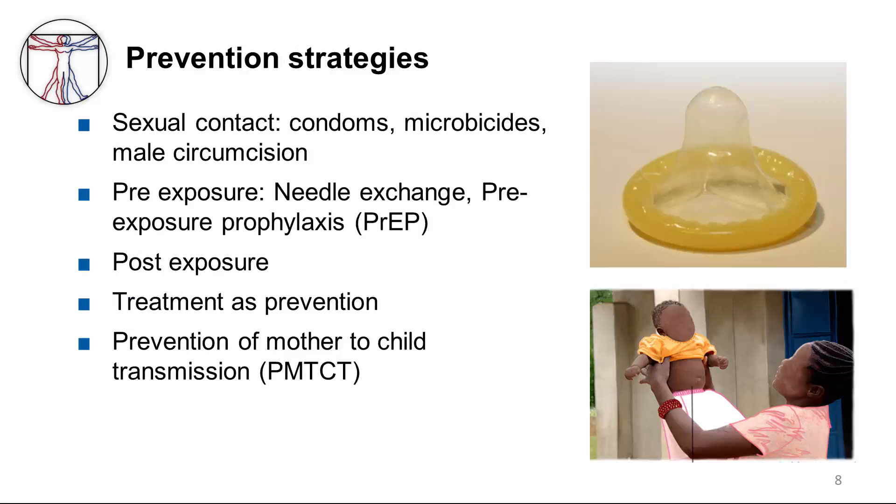This slide presents a summary of some of our prevention strategies. Regarding sexual contact, condoms, microbicides, and male circumcision have been studied and are effective. For pre-exposure strategies, these include needle exchange and pre-exposure prophylaxis. There's also post-exposure prophylaxis, such as in healthcare workers who have had needle stick injuries. There's the idea of treatment as prevention, with evidence showing that treating the HIV-infected partner in serodiscordant couples can effectively prevent seroconversion in the HIV-negative partner. Finally, prevention of mother-to-child transmission is an effective strategy that uses antiretroviral therapy. Behavioral interventions, such as counseling and testing itself, have also been touted as prevention strategies.